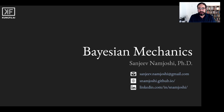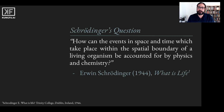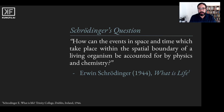Bayesian mechanics is more relevant today than ever before because it holds the key to unlocking artificial general intelligence. I'd like to start with the following question: what is life? This is the title of Erwin Schrödinger's 1944 book where he famously asks how the events in space and time which take place within the spatial boundary of a living organism can be accounted for by physics and chemistry.